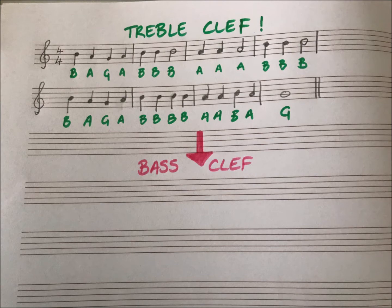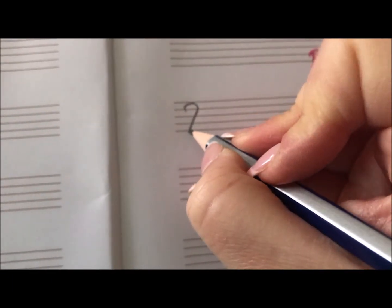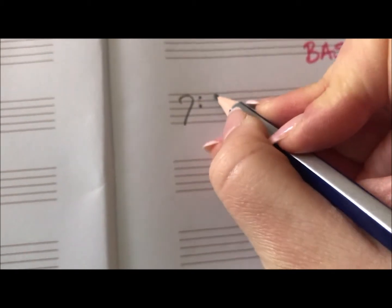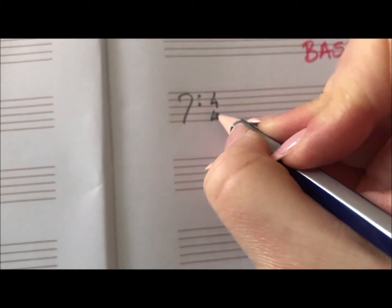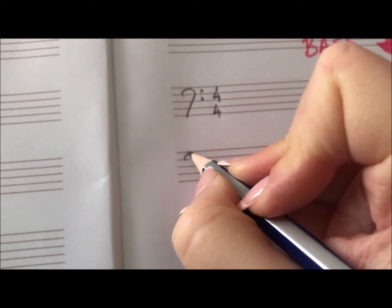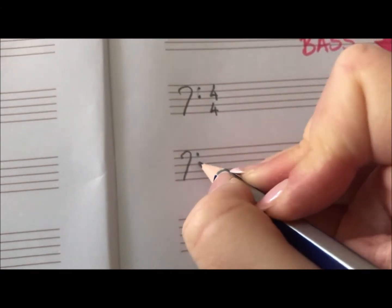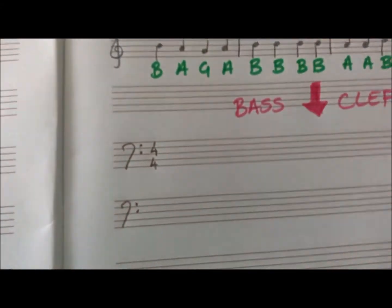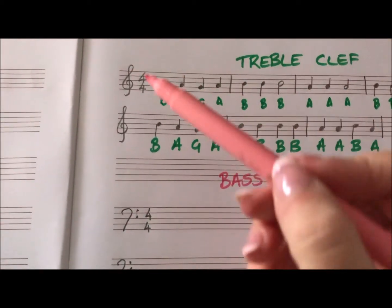In order to get started with this, what we're going to do is first of all go with the clefs. We're going to draw in our bass clef and our time signature which is the exact same as what it was in the treble clef, 4-4, and I'm writing out two lines of this because there are two lines of the treble clef as well.